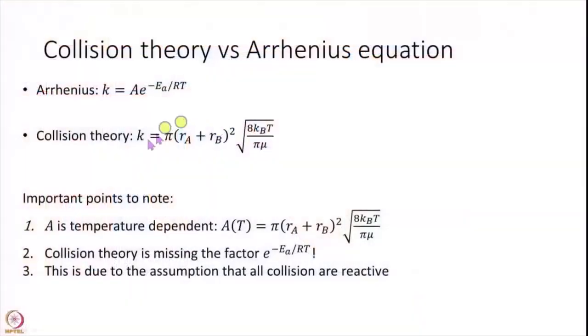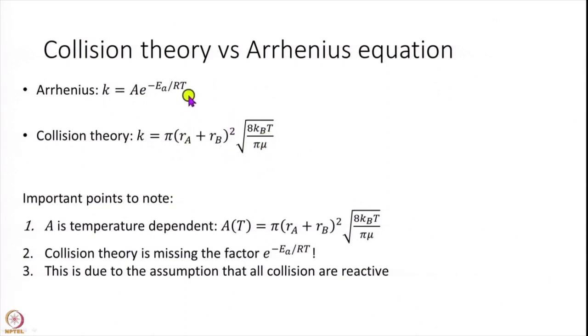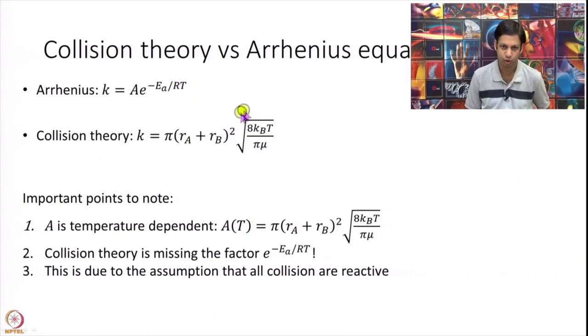A quick recap: the Arrhenius equation is K equal to A times e to the power of minus E over RT. With Collision Theory, what we have derived so far does not have this exponential. This term is essentially your pre-exponential — this is actually the A of the Arrhenius equation.